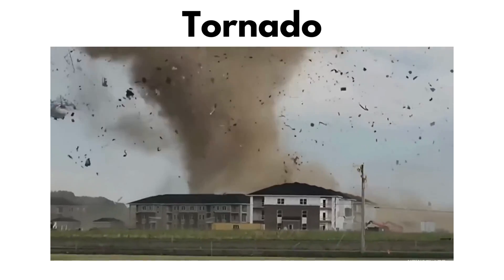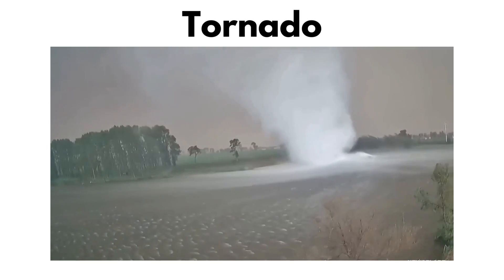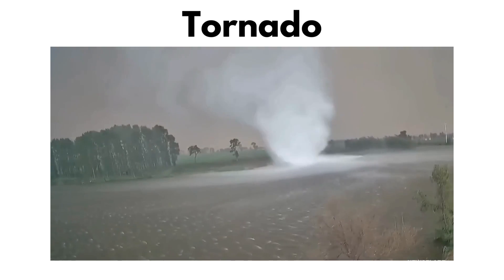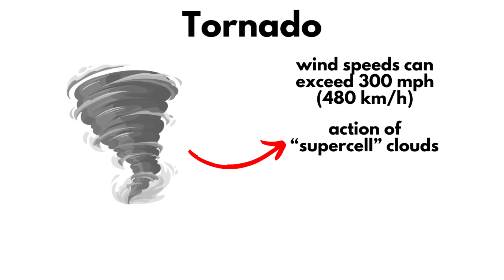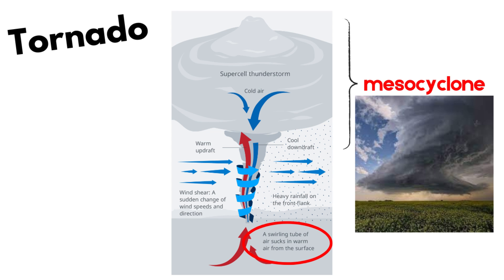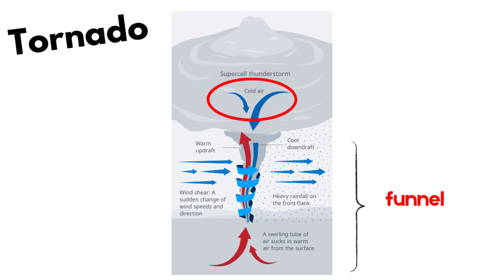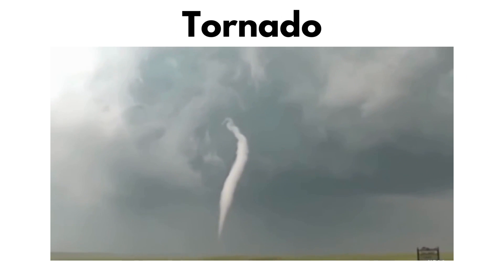Tornado is an extremely powerful and destructive meteorological phenomenon, characterized by a column of intensely rotating air extending from the base of a storm cloud to the Earth's surface, taking on a funnel or cone shape. Wind speeds can exceed 300 mph. Tornadoes typically form in association with severe storms, particularly those generated by supercells, which are large, long-lived storms with persistent rotation. Within a supercell, rising currents of warm, moist air can create a region of vertical rotation known as a mesocyclone. If conditions are favorable and the mesocyclone is strong enough, a downward rush of air can occur, creating horizontal rotation. When this horizontal rotation is tilted into the vertical by the storm's updraft, a tornado forms.